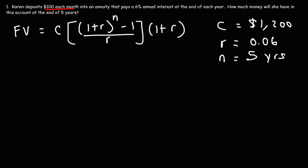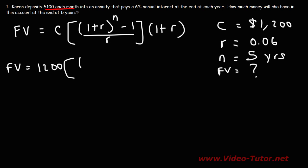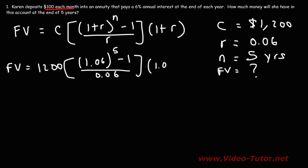It's always good to make a list of the variables you have and the variable you're looking for. Now let's plug everything into the formula. It's going to be 1200 times 1 plus 0.06, which is 1.06, raised to the 5th power, minus 1, divided by 0.06, and then times 1.06.